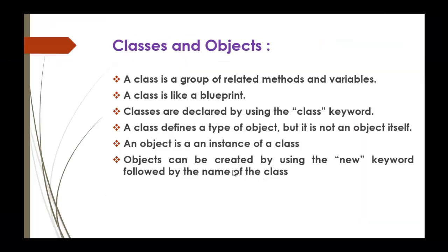Now it's time to create an object. A class defines a type of object, but it is not an object itself. An object is an instance of a class. Objects can be created using the new keyword, followed by the name of the class. To understand it clearly, we will jump into the presentation.